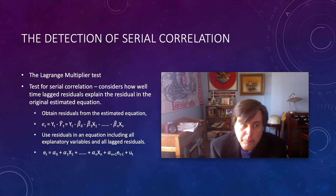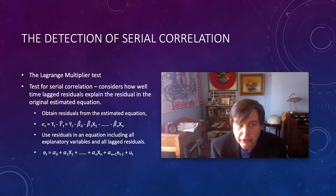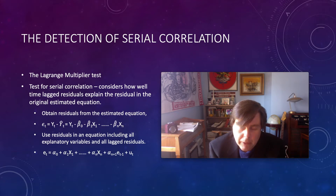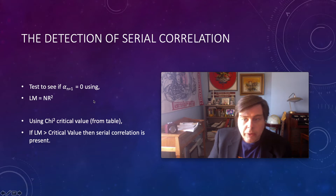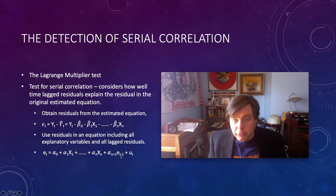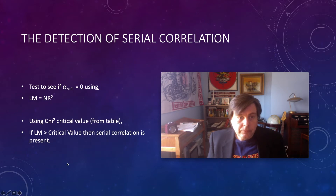The second test we'll discuss for detecting serial correlation is the Lagrange Multiplier test. This considers how well time-lagged residuals explain the residual in the original estimated equation — similar to how we detected multicollinearity, where we checked whether a specific independent variable could be explained by the other independent variables in the equation.